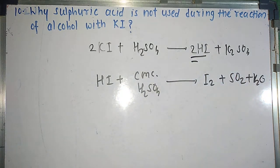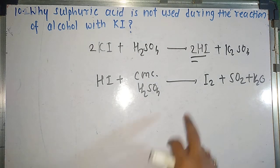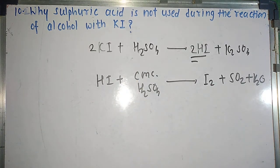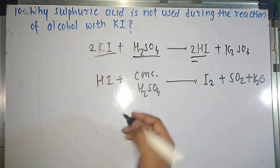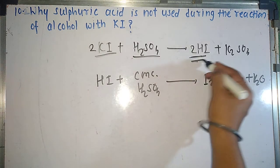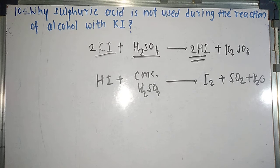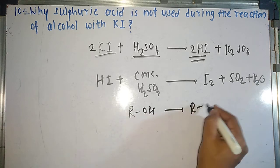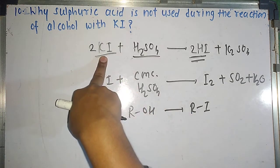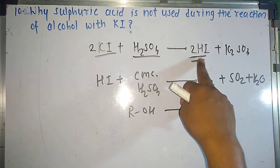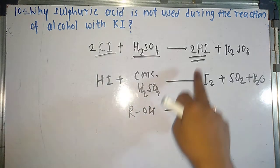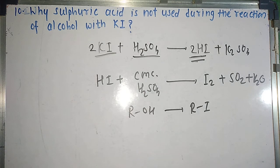That's why we cannot generate HI by mixing KI and H₂SO₄. When we use orthophosphoric acid instead, it cannot oxidize HI, so HI is successfully produced. To summarize: when potassium iodide reacts with sulfuric acid, we first get hydrogen iodide, but whatever HI is produced is immediately oxidized by concentrated sulfuric acid into I₂. Hence, we don't get the HI we were expecting. That is what you have to remember about this question.